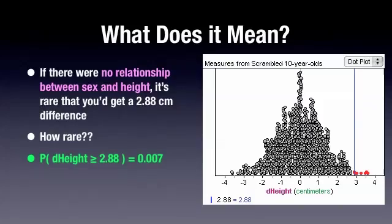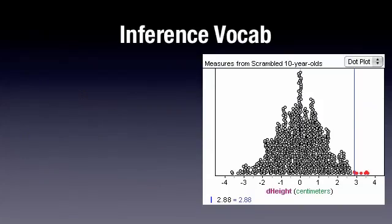That's the empirical probability. The probability that D-height is greater than or equal to 2.88, and that's 0.007. 7 out of 1,000. Let's look at it with our inference vocabulary.